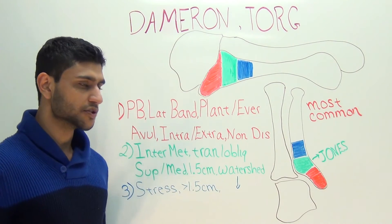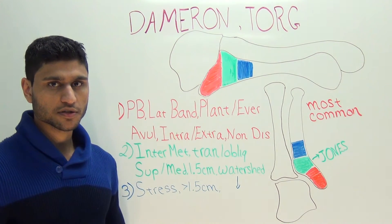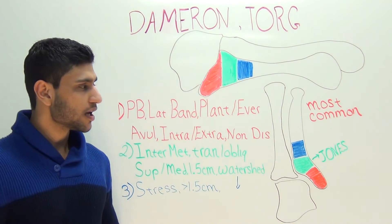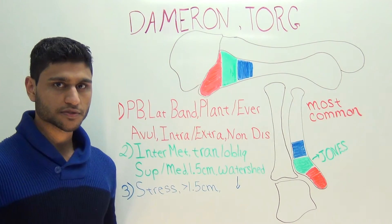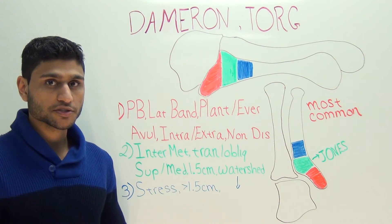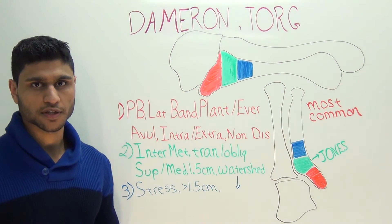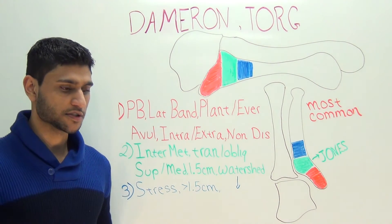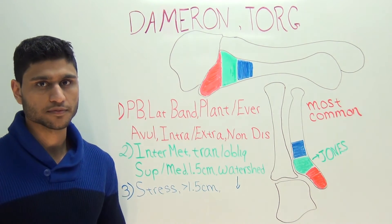These occur most times about 1.5 centimeters distal to the cuboid-metatarsal joint surface. The issue with a Jones fracture is that these occur in a watershed area, meaning there is poor vascular supply to this area, which makes healing time longer and more complicated — with complications such as delayed union or non-union.